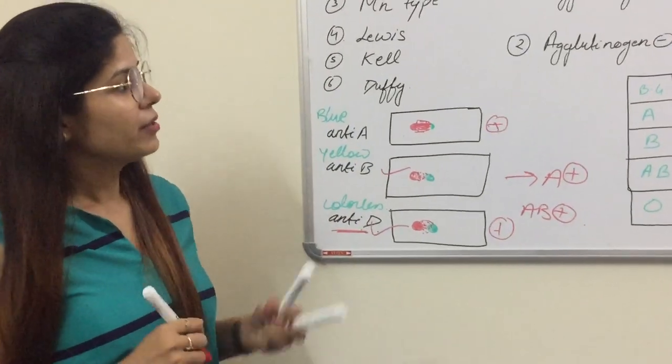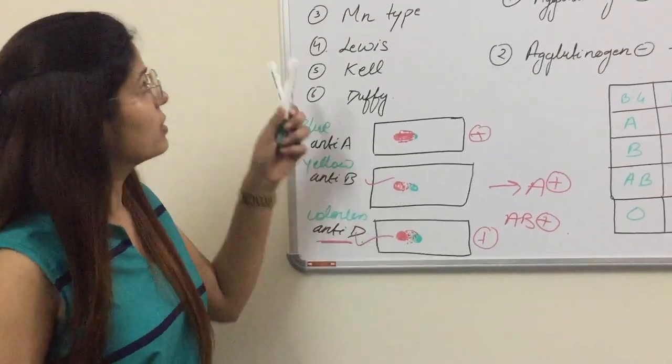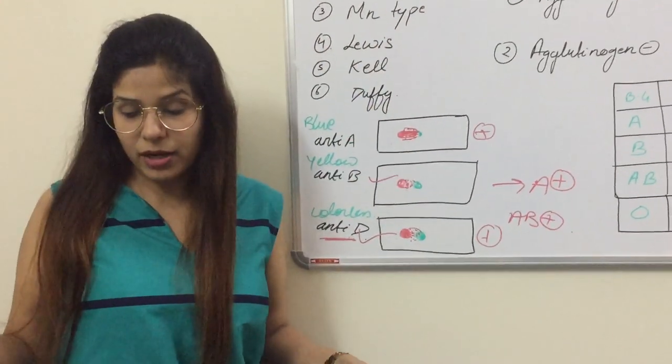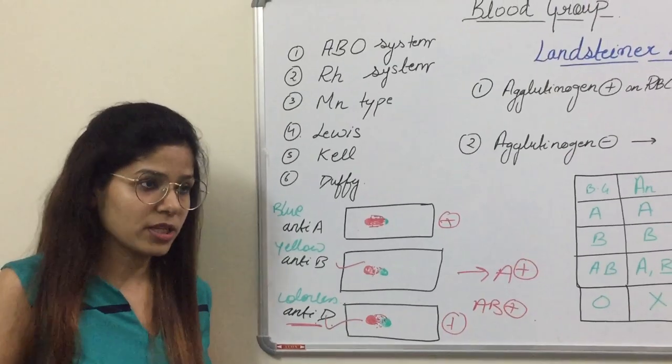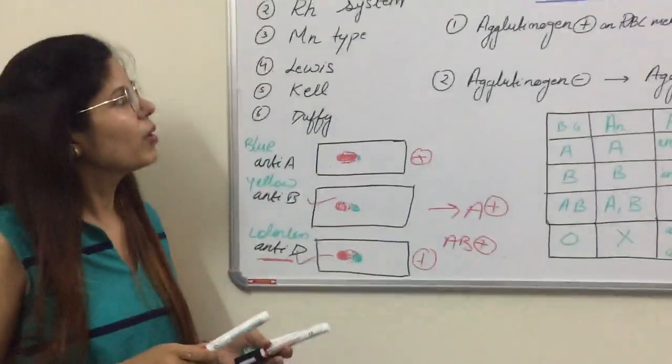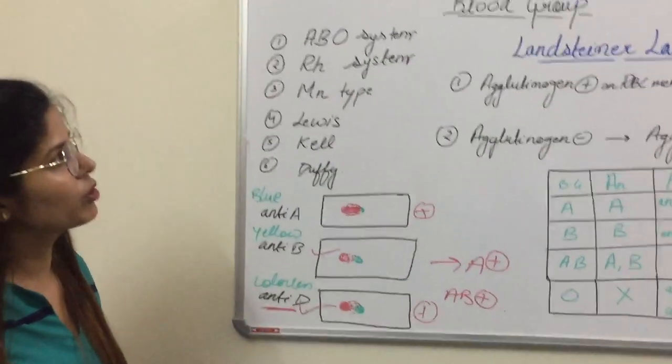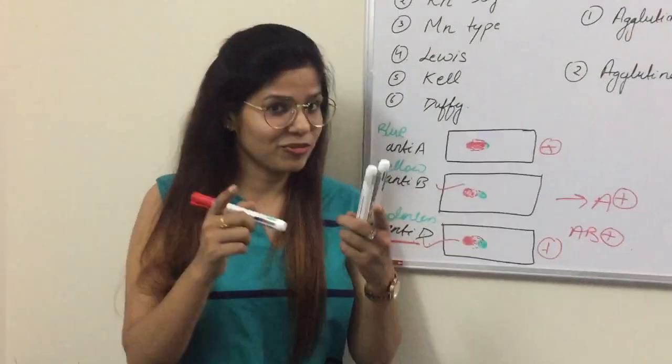There are different types of antibodies in the ABO blood group system. In my next lecture, we will discuss about this. This is a short overview about the blood group system. Thank you and see you in my next video.